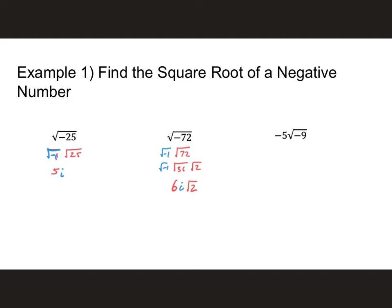The last one: negative 5 times the square root of negative 9. The square root of negative 9 splits into the square root of negative 1 and the square root of 9. The square root of 9 is 3, and I still have i. Multiplying it all together: negative 5 times 3 gives me negative 15, and then i. So the answer is negative 15i. Once you simplify radicals, the rest of the problems end up being easy because we can treat i like a variable.